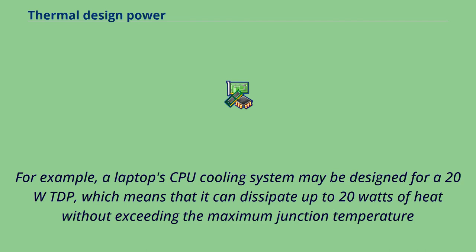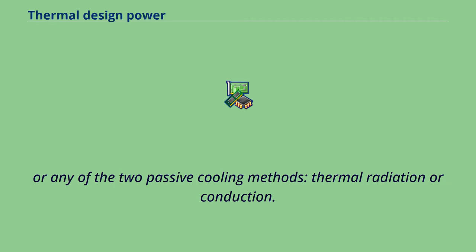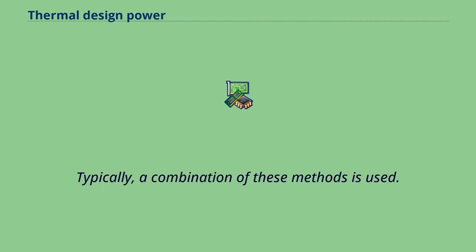For example, a laptop's CPU cooling system may be designed for a 20W TDP, which means that it can dissipate up to 20 watts of heat without exceeding the maximum junction temperature. For the laptop's CPU, a cooling system can do this using an active cooling method such as a heat sink with a fan, or any of the two passive cooling methods: thermal radiation or conduction. Typically, a combination of these methods is used.